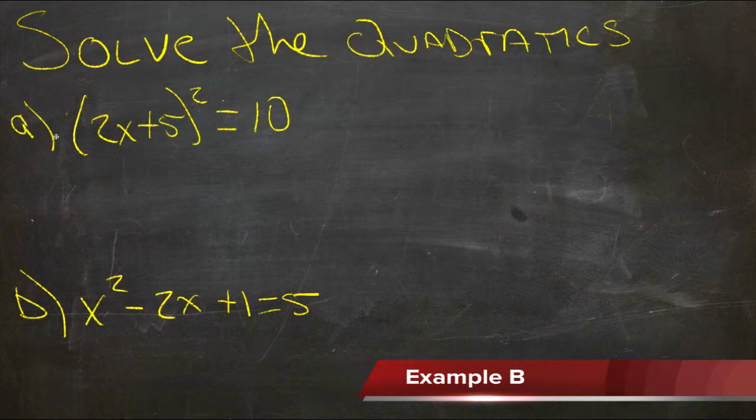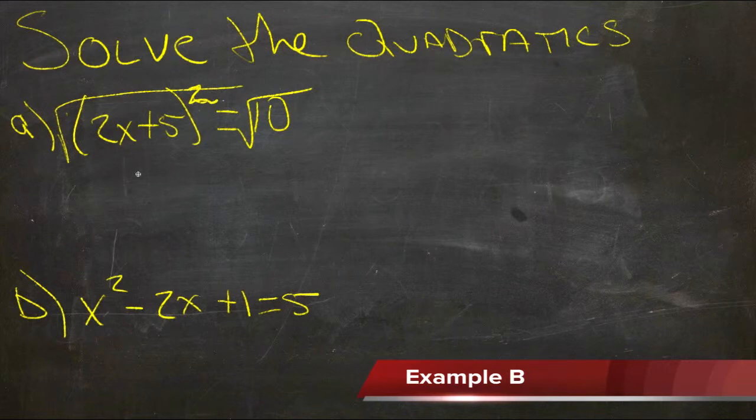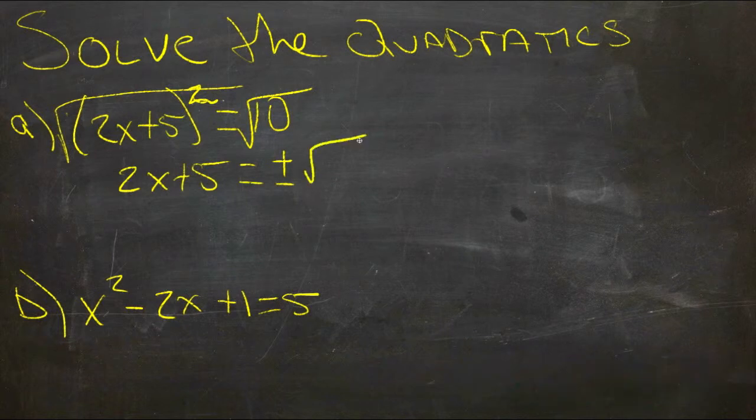So what we're going to do here is, as before, we'll take the square root of both sides first, since we have just a single square root on the left here. So we get 2x plus 5 is the positive or negative square root of 10.